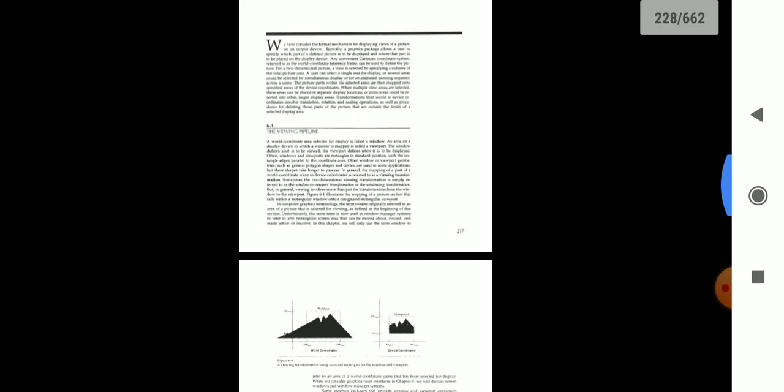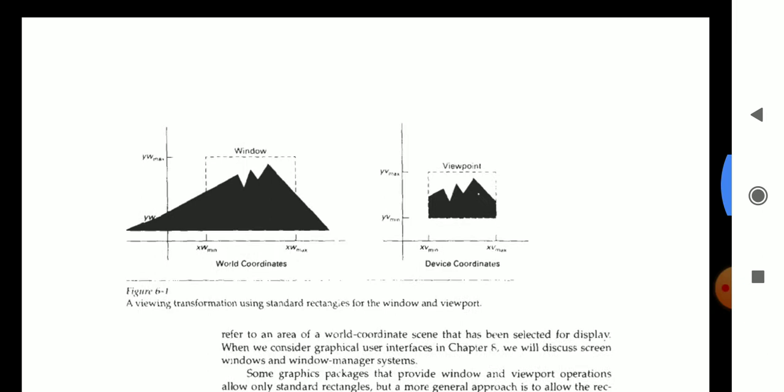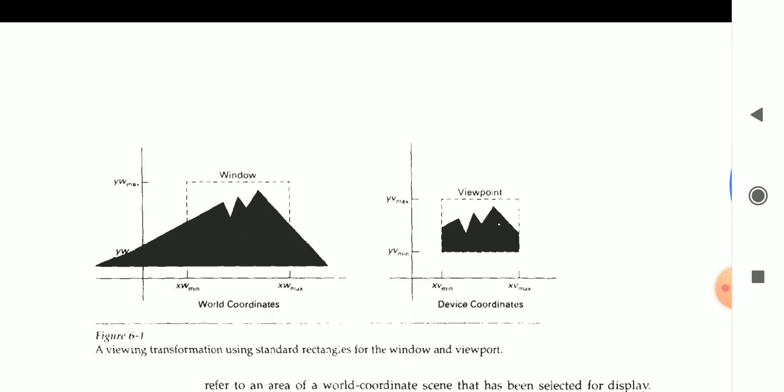Now the next question is, we are going to see the pipeline of view. Look at these two diagrams, XW, YW is called world coordinate. Minimum maximum value is given.